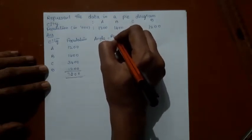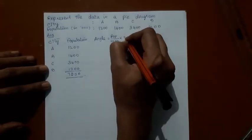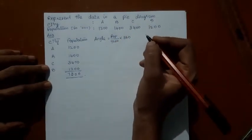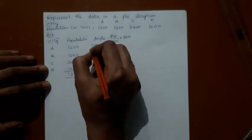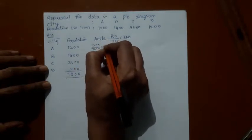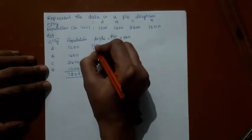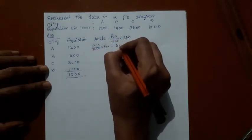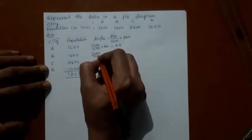1200 by 7200 into 360 is 60. 1400 by 7200 into 360 is 70.